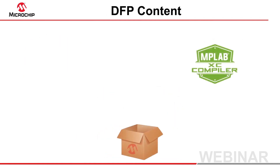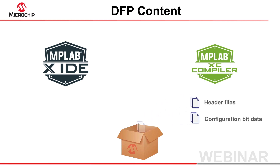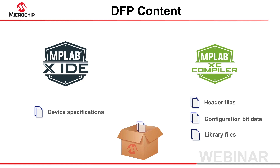The content of device family packs includes compiler-related device-specific header files, configuration bit data and libraries, as well as device information displayed by the IDE and algorithms it uses to program and debug the device.